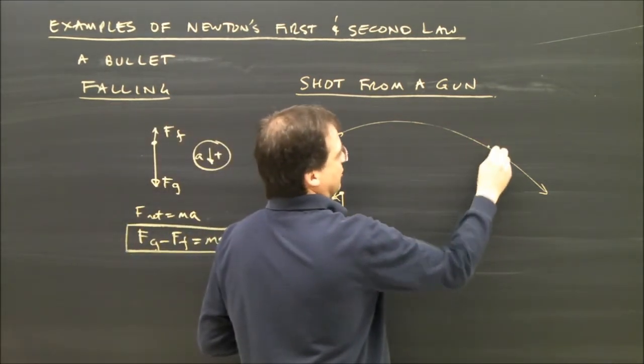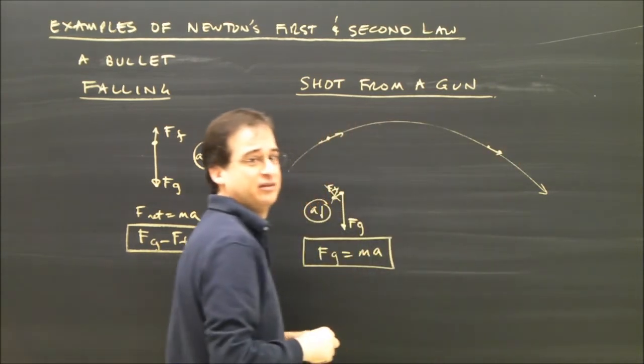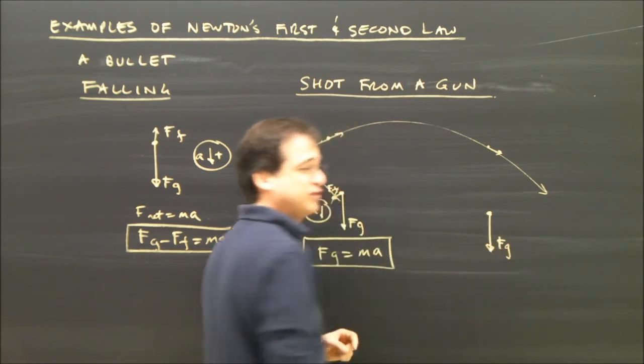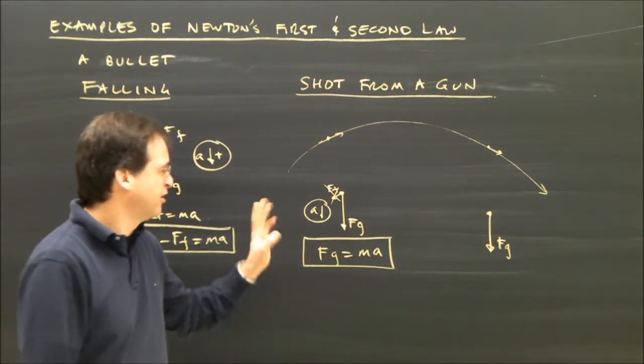What about when the bullet is over here, traveling this way? Well, the free body diagram, is there gravity? Yes. Is it sitting on a surface? No. Is something pushing or pulling on a rope? No.